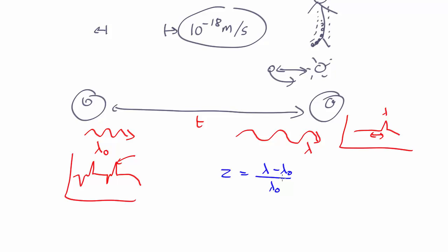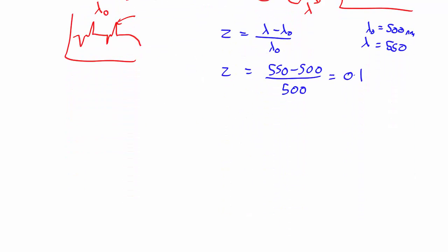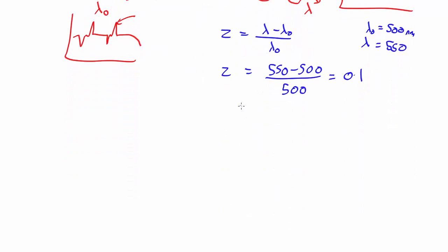So if, for example, we know something has a lambda nought of 500 nanometers, and we observe it at 550 nanometers, then the redshift is 550 minus 500 over 500, which is 0.1. What does that mean? It means that while this photon has been travelling, space has expanded by a factor of 0.1, by 10%. So space is now 10% larger than it was when the photon set out.